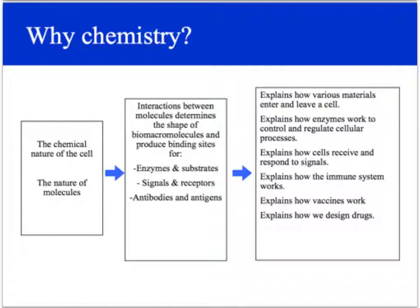We need to know how enzymes work to control and regulate cellular processes. From year 11, you should remember that enzymes have optimal ranges for temperature and pH, so we need to understand how within the body they get the optimum pH required to work. We need to know how cells receive and respond to signals, how the immune system works, how vaccines work. Drug design has been taken off the study design, but it's really helpful to understand because there are underlying concepts such as specific binding sites that link into it. And experimental design is still in the study design, so if you can understand rational drug design, by default you're also understanding experimental design.